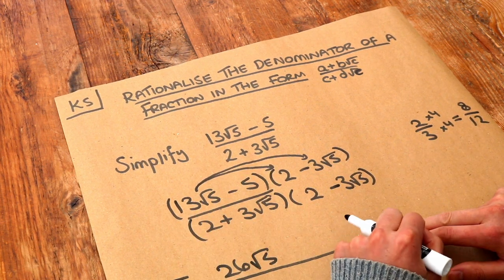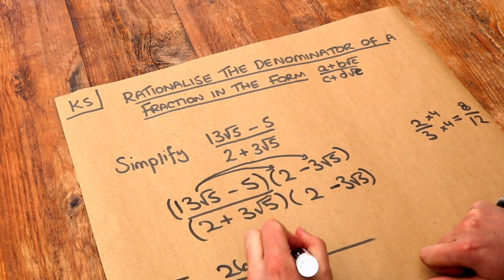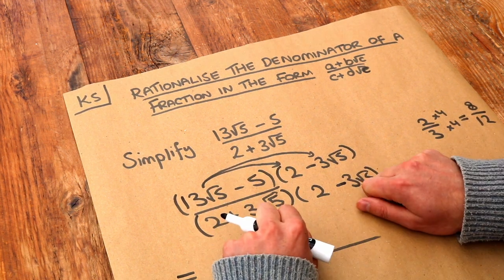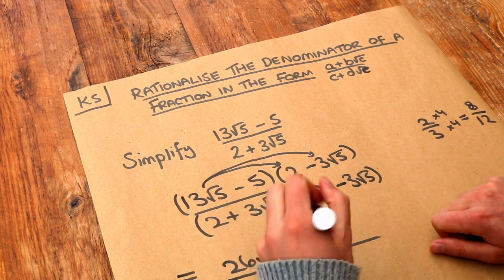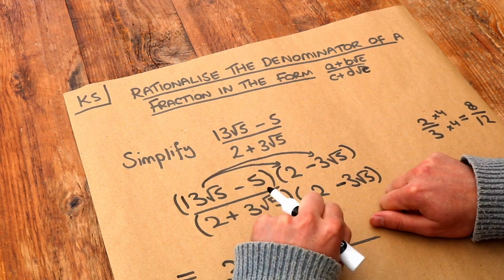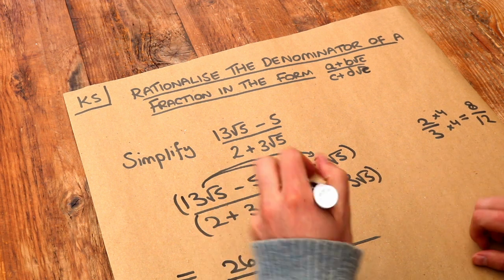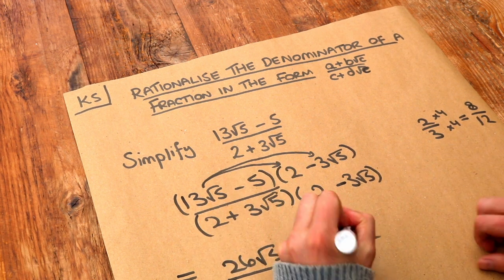I like to get the sign right first. Well, positive times negative is negative. And then we multiply the non-surds first. 13 times 3 is 39, and then I multiply the surds. So root 5 times root 5 is root 25. We'll simplify that later.